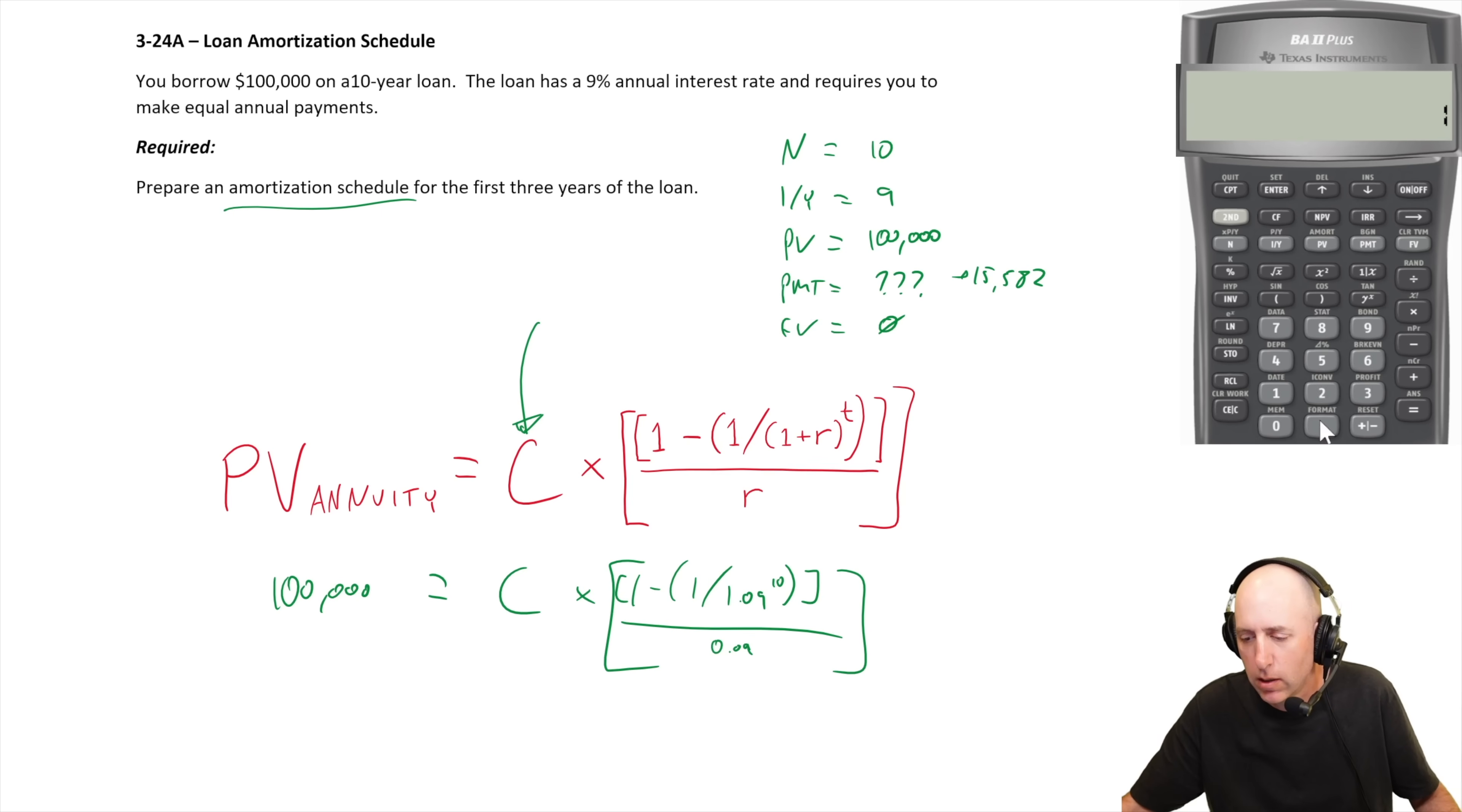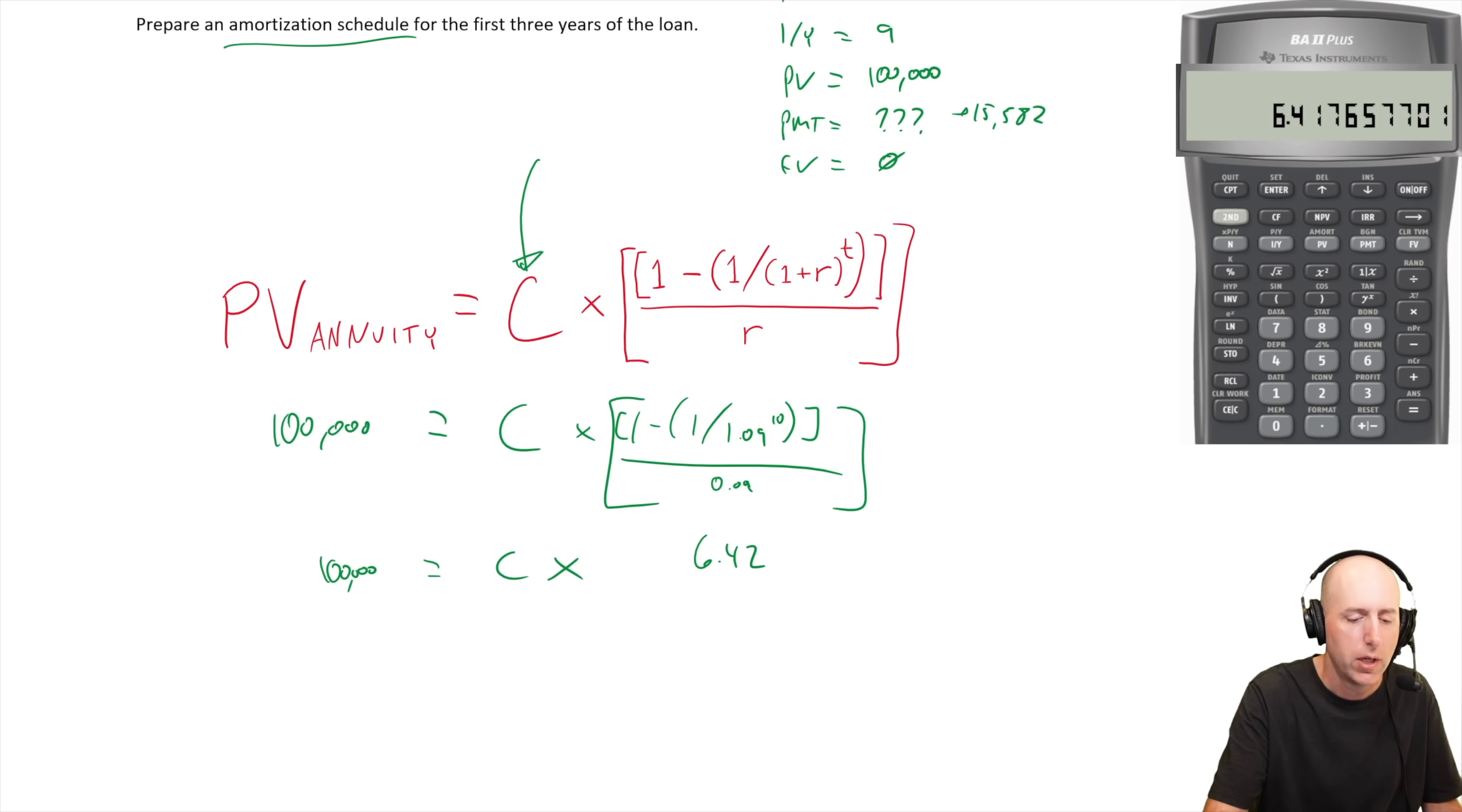Let's solve 1.09 to the 10th power. I go one over that number. So one over X, I go one minus that number. So I do minus one hit the plus minus, divided by 0.09. And the total amount of what's in brackets is 6.42. So it's a hundred thousand equals C times 6.42, solving for C. C equals a hundred thousand over 6.42. And I'll just take this number, I hit one over X times a hundred thousand. And that gets me the answer of 15,582. C equals 15,582. And look at that. That was our payment from before.